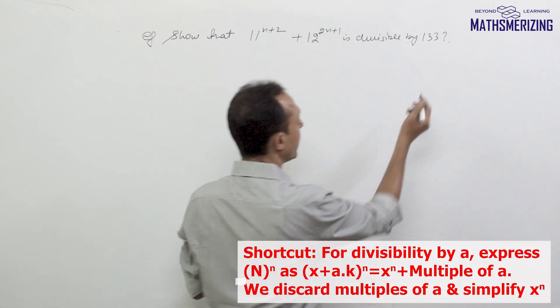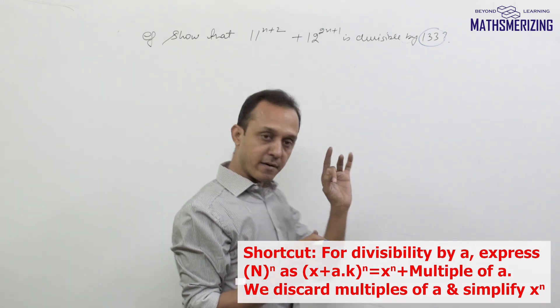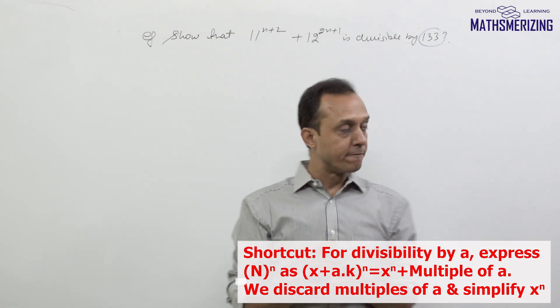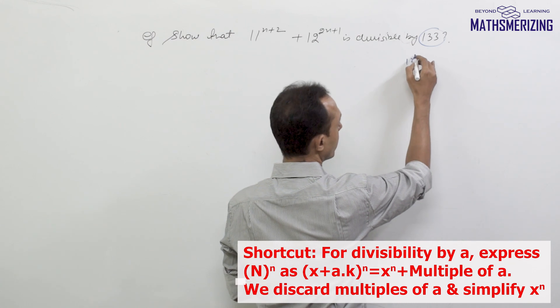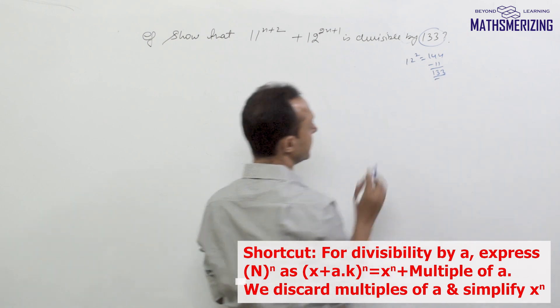Now I need to find 133 in this expression. What I know is that 12 squared is 144, and 144 minus 11 is simply 133.